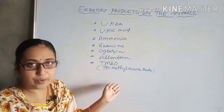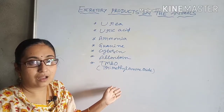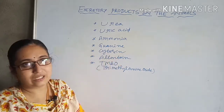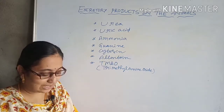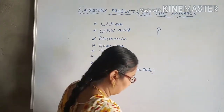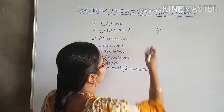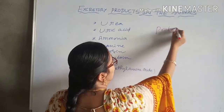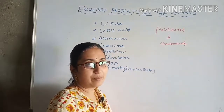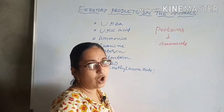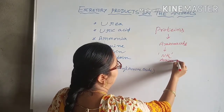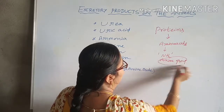Now, how are these excretory products produced? These excretory products are nothing but nitrogenous compounds. The nitrogen-based compounds in food are proteins. Proteins are made up of different types of amino acids, and amino acids consist of the amine group.